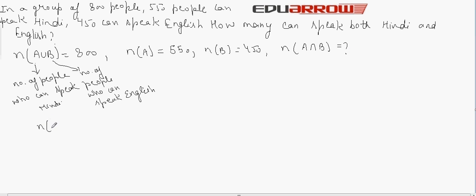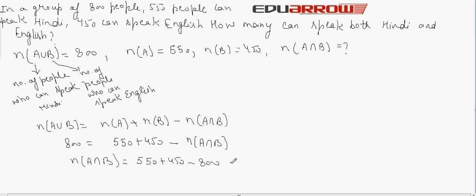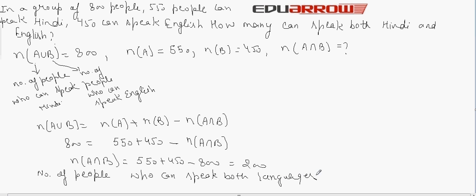Using the formula: n(A union B) equals n(A) plus n(B) minus n(A intersection B), we get 800 equals 550 plus 450 minus n(A intersection B). Therefore n(A intersection B) equals 550 plus 450 minus 800, which equals 200. So the number of people who can speak both languages is 200.